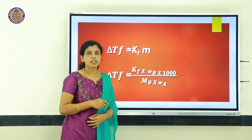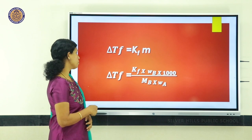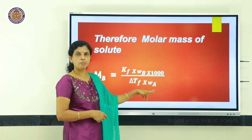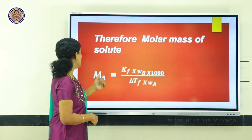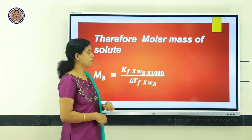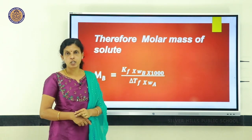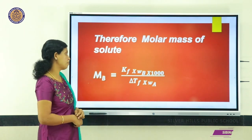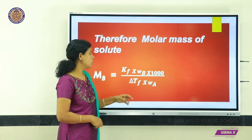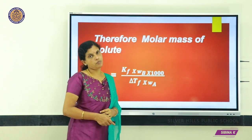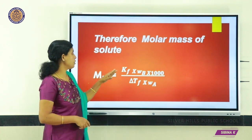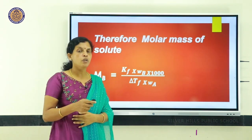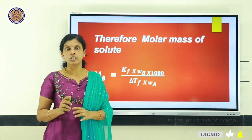From this equation we can derive Mb: Mb = (Kf × Wb × 1000) / (ΔTf × Wa), where Mb is the molar mass of solute, Kf is the cryoscopic constant, Wb is the weight of solute, and Wa is the weight of solvent. If we know Kf, ΔTf, Wb, and Wa, we can calculate the molar mass of the unknown solute.